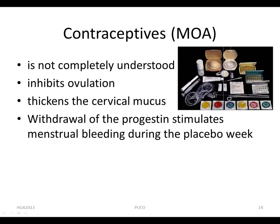Estrogen provides a negative feedback on the release of LH and FSH by the pituitary, thus preventing ovulation. Progestin also inhibits LH release and thickens the cervical mucus, thus hampering the transport of sperm. Withdrawal of progestin stimulates menstrual bleeding during the placebo week.